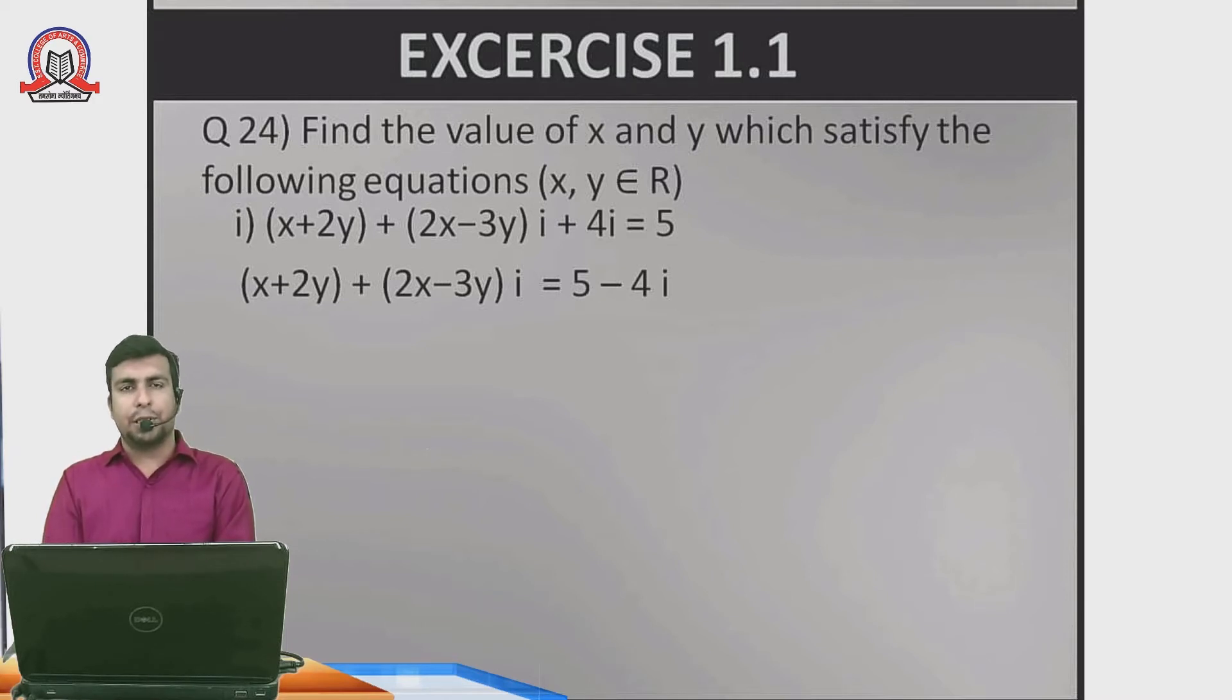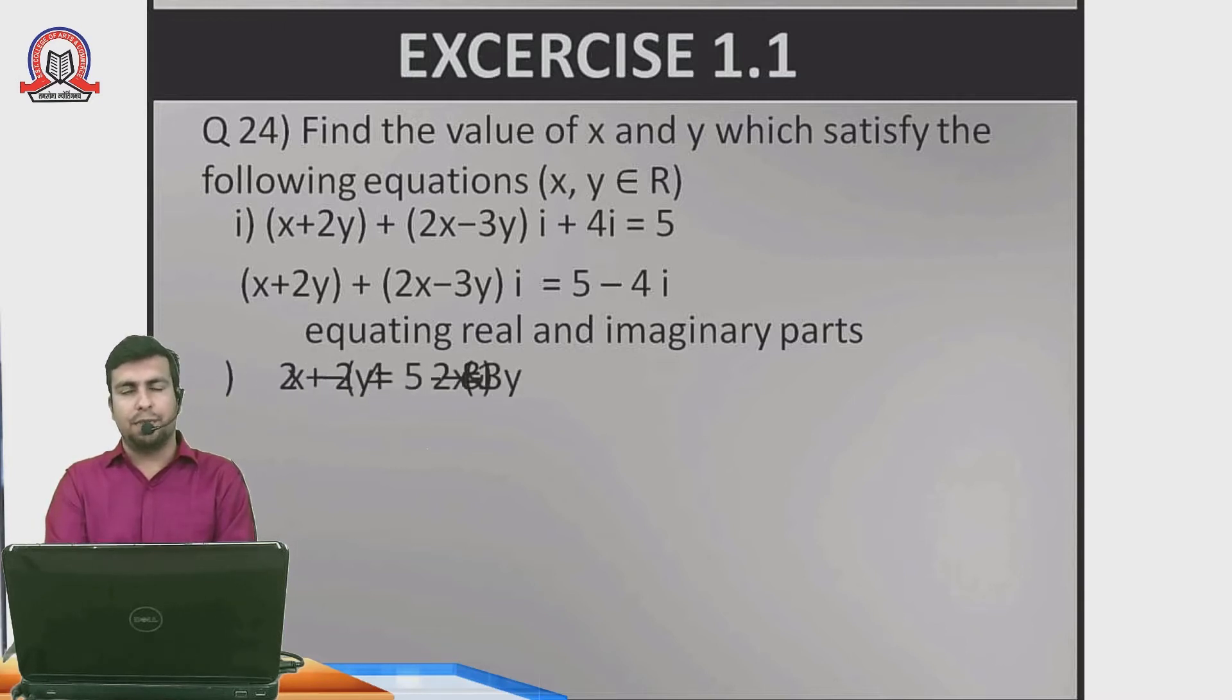Now we have one term without i and one with i on both sides. This is called equating real and imaginary parts. Equating the real parts: x plus 2y equals 5. Equating the imaginary parts, i cancels out, giving 2x minus 3y equals minus 4.